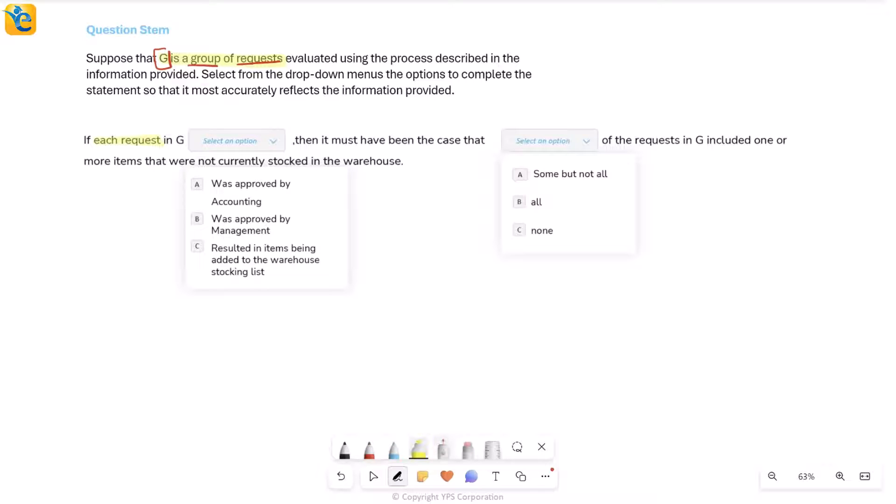Read further: if each request in G—and then you have your choices—if each request was approved by accounting, was approved by management, resulted in items being added, so restocking. If each request went through one of these things, then it must have been the case—so if we choose this choice, then the rest is a guaranteed situation that has to happen. It must have been the case that some but not all of the requests, all of the requests, none of the requests—so we're talking about the requests and how many. That I'm trying to answer—how many of the requests in G included one or more items that were not currently stocked in the warehouse.